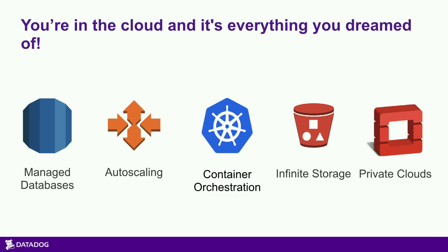Things will configure themselves magically most of the time with Chef or Puppet. We've got orchestration management tooling like Kubernetes, infinite storage with things like S3 and EBS, and even within our own environments we have things like OpenStack.